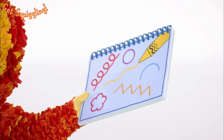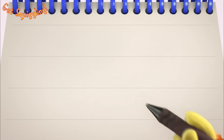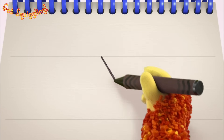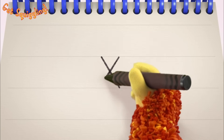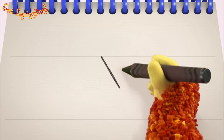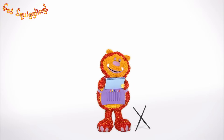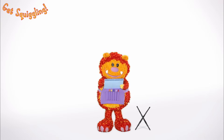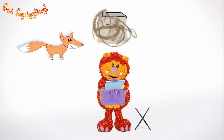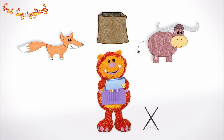Have you got your squiggle pads and squiggle sticks ready? Let's get squiggling! Holding your squiggle stick like this, move it down, stop, down, stop — the letter X! Let's squiggle it again: go down, stop, down, stop — the letter X! Not many things begin with the letter X, so let's squiggle some things that end with the letter X instead: a fox, a box and an ox — they all end with the letter X!